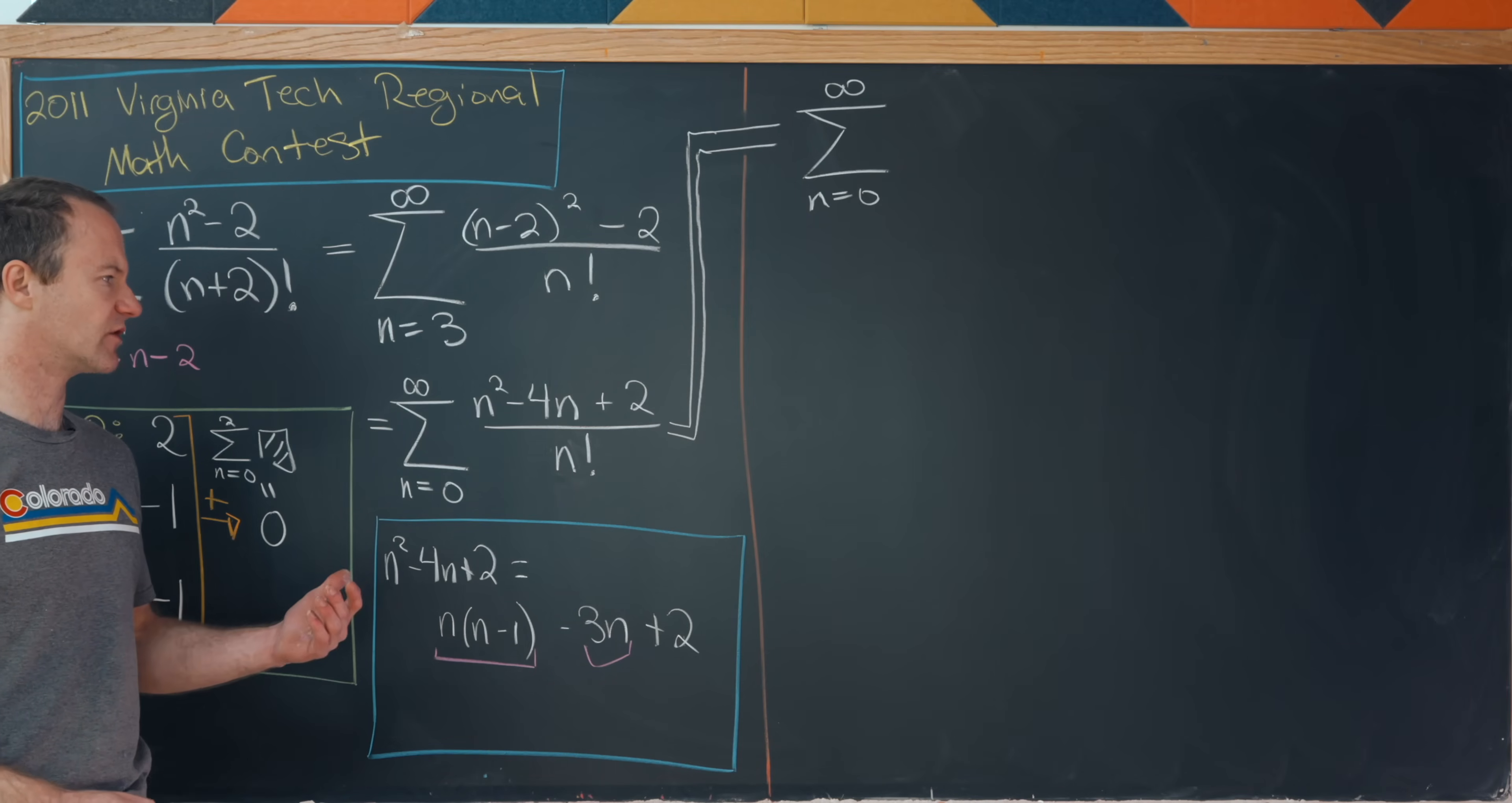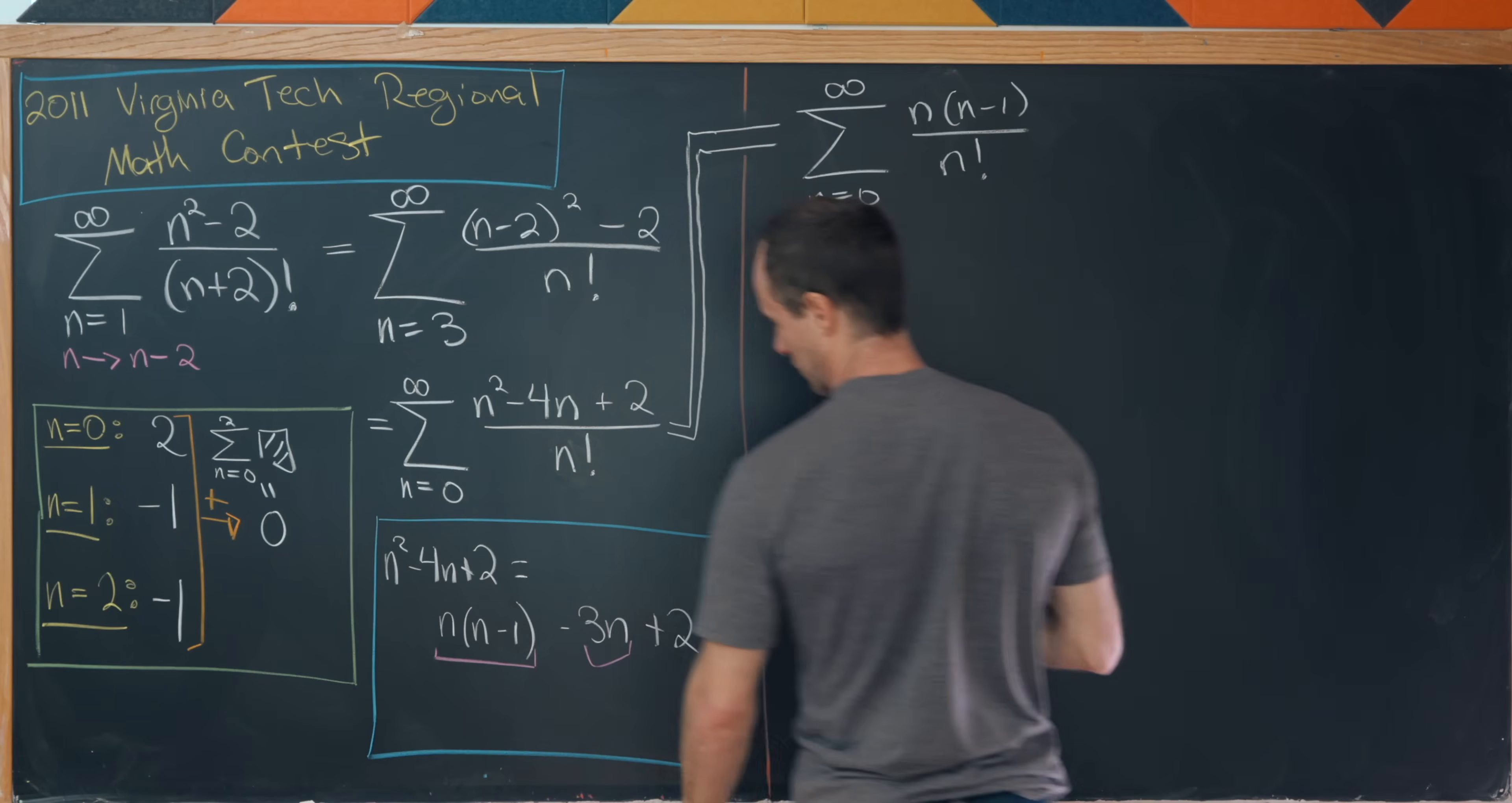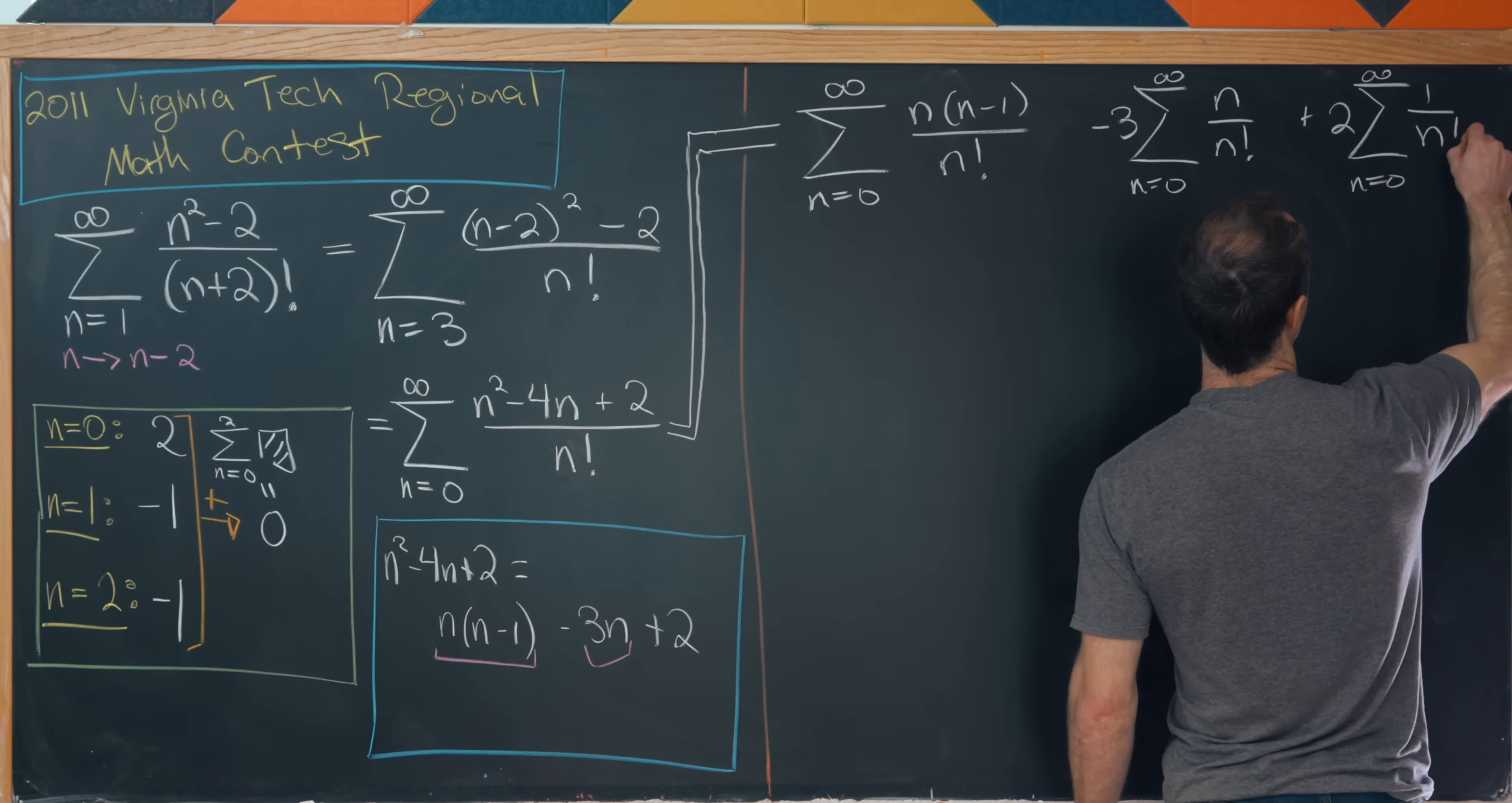Okay, so now let's take this up here and rewrite it as three sums. I guess you really need to argue that you're allowed to rewrite it as three sums because they all absolutely converge. But that's fairly easy to see given the fact that you've got this factorial in the denominator, which utterly obliterates the growth of a polynomial in the numerator. Okay, so anyway, we've got n times n minus one over n factorial. And then next, we'll have minus three times the sum as n goes from zero to infinity of n over n factorial. And then finally, plus two times the sum as n goes from zero to infinity of one over n factorial.